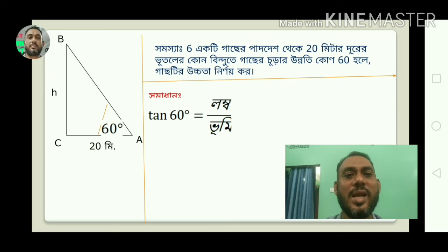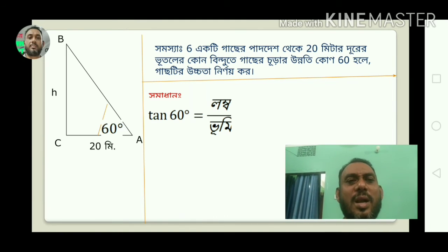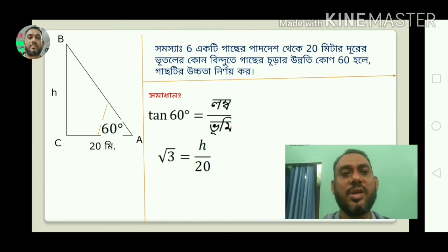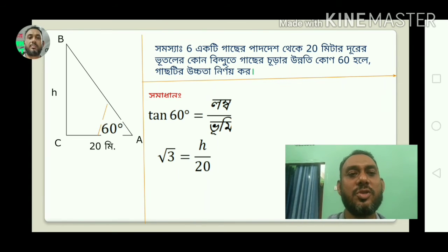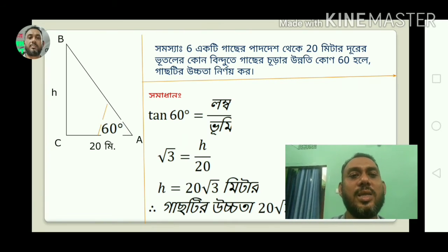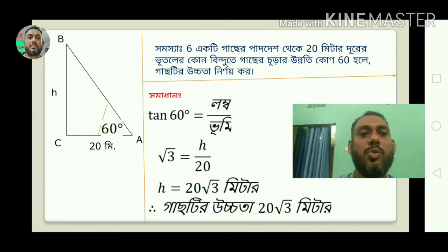We have written tan(60°) equal to Lomba divided by Bhoomi. We have written tan(60°) equals root 3. We have written tan(60°) equal to 20 root 3.